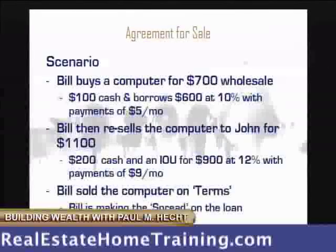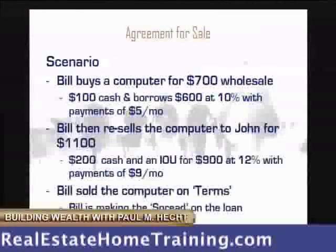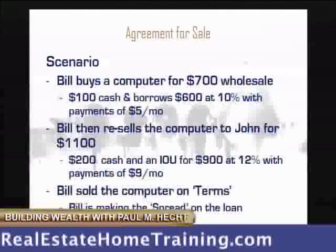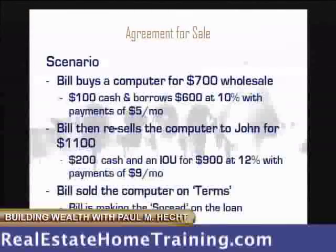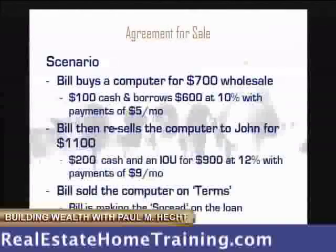He then resells the computer to John for $1,100 because he bought it wholesale. John doesn't have the same lead that Bill does, and John doesn't have all the cash either. So John gives Bill $200 cash and says: you can write me an IOU note for $900.